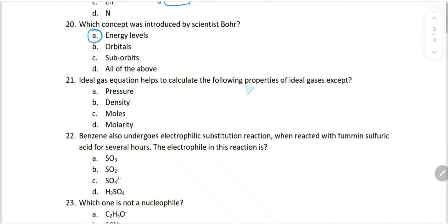Ideal gas equation helps to calculate the following properties of ideal gases except... yes, PV equals nRT. From this we can determine pressure, it can be arranged for density, we can determine moles. But we cannot determine molarity from this. That is choice D.